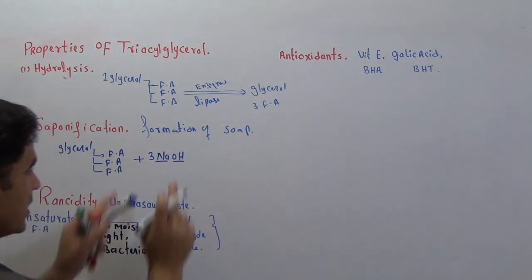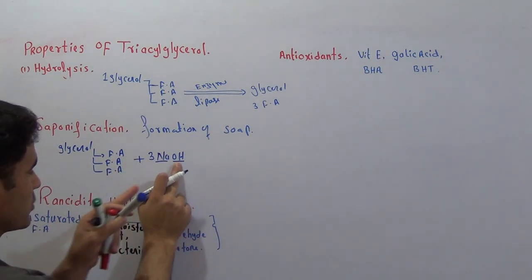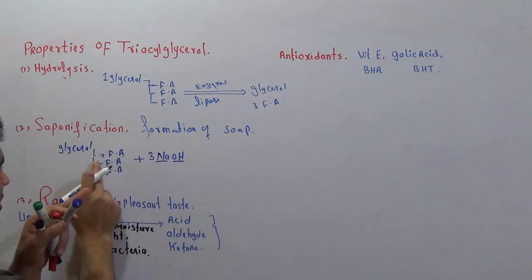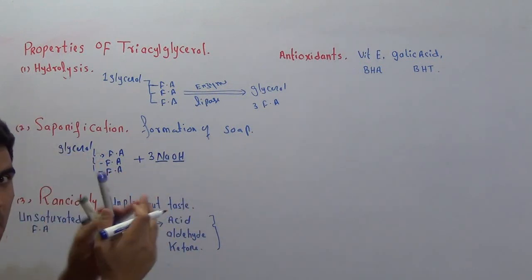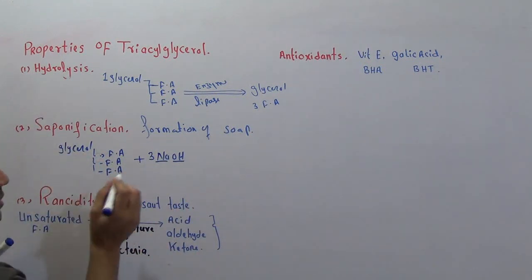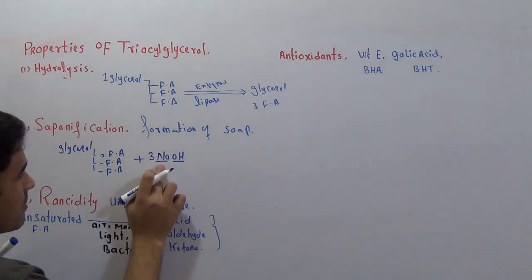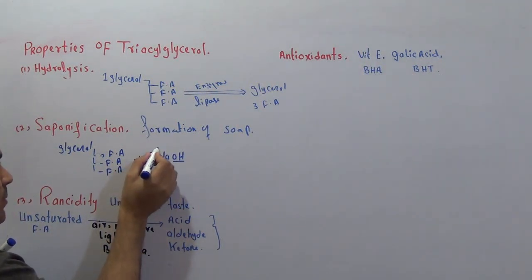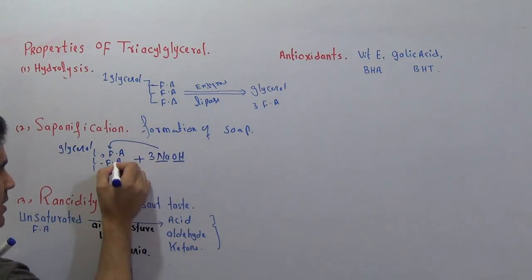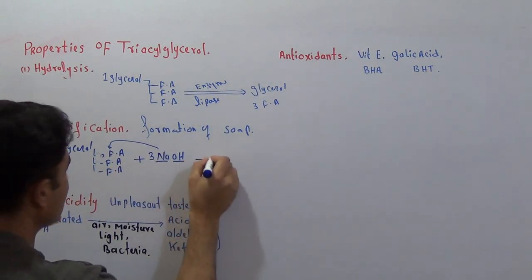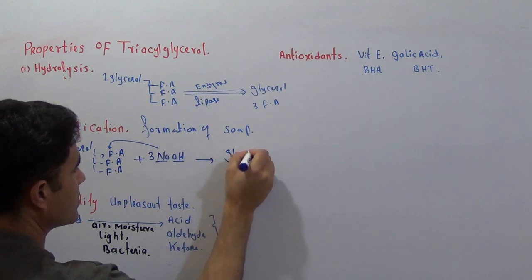When we combine this with three sodium hydroxide molecules - three sodium atoms and three OH groups - these three OH groups will come and break this bond so that the three fatty acids are now free. The three sodium ions will come, one sodium attached with each fatty acid.